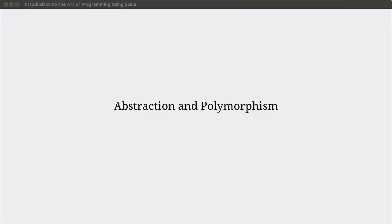Hello, and welcome back to the video lecture series for Introduction to the Art of Programming using Scala. We're moving on to a new chapter now, and this chapter we're going to learn about abstraction and polymorphism. Most of our time will be spent on polymorphism. These two topics are related in many ways, and the concept of abstraction is something that is going to span through the entire rest of the second half of this book. It's probably one of the most important things that you will learn in computer science.